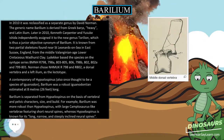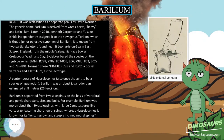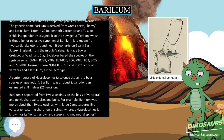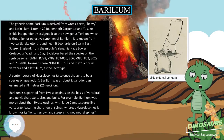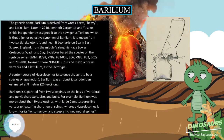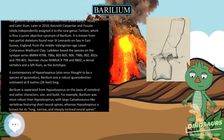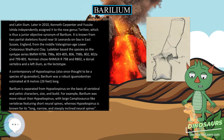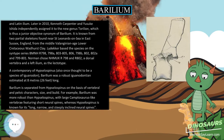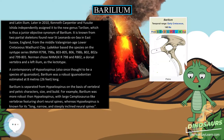For example, beryllium was more robust than Hypselospinus, with large Camptosaurus-like vertebrae featuring short neural spines, whereas Hypselospinus is known for its long, narrow, and steeply inclined neural spines.